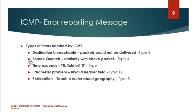The second type of error reporting message is source-quench. Source-quench is somewhat similar to a choke packet. In flow control mechanism at the network layer, when there are errors in between, a special packet is sent back to the source — that is called a choke packet. Source-quench is the flow control mechanism error reporting message.